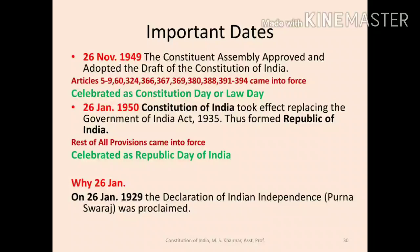Now, the question is why 26 January was chosen. There is a story behind it. On 26 January 1929, the declaration of Indian independence, i.e., Poorna Swaraj, was proclaimed by India.